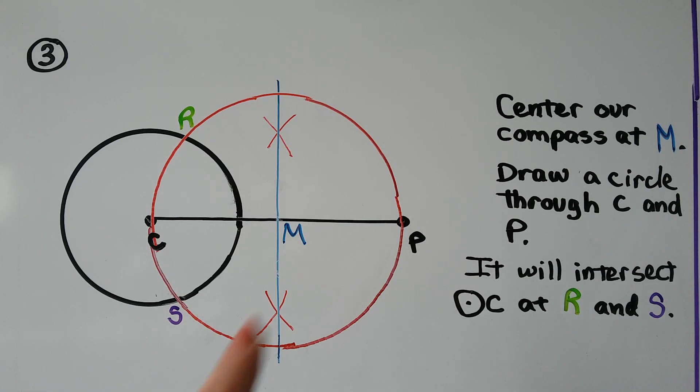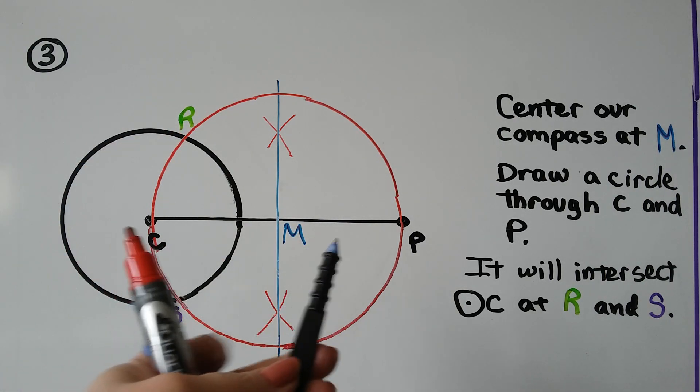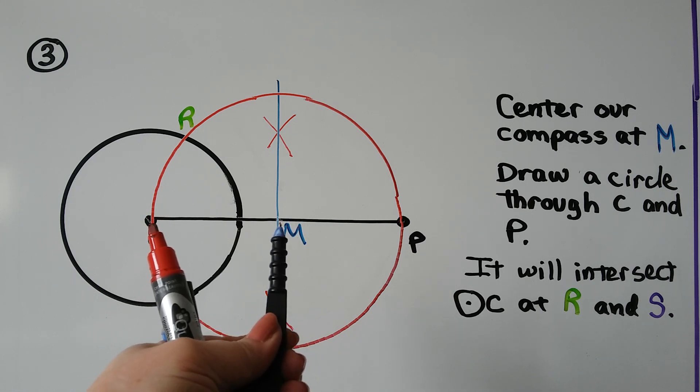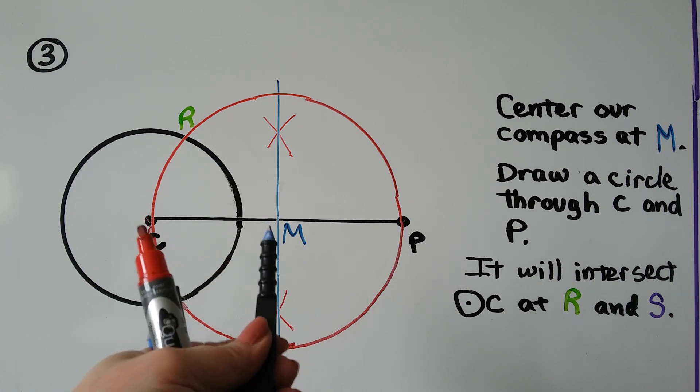So now that we've located the midpoint, we're going to center our compass on M. We're going to measure it the distance from C to M, or from M to P, either way, because we know that's the midpoint.